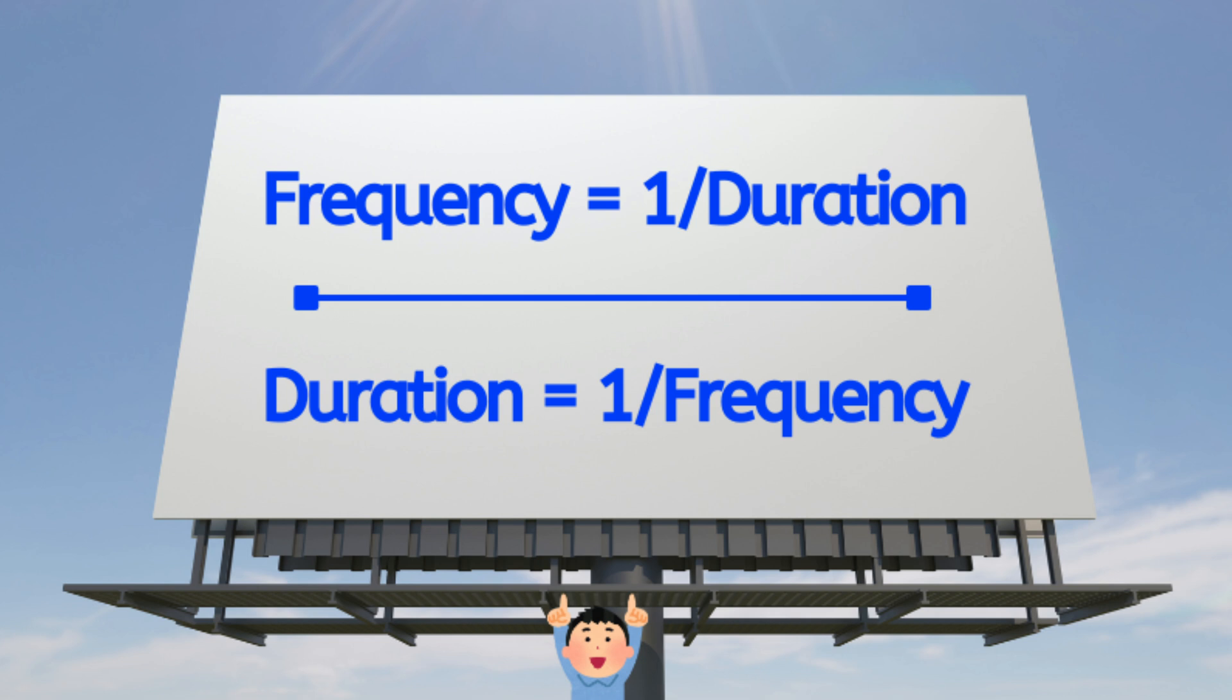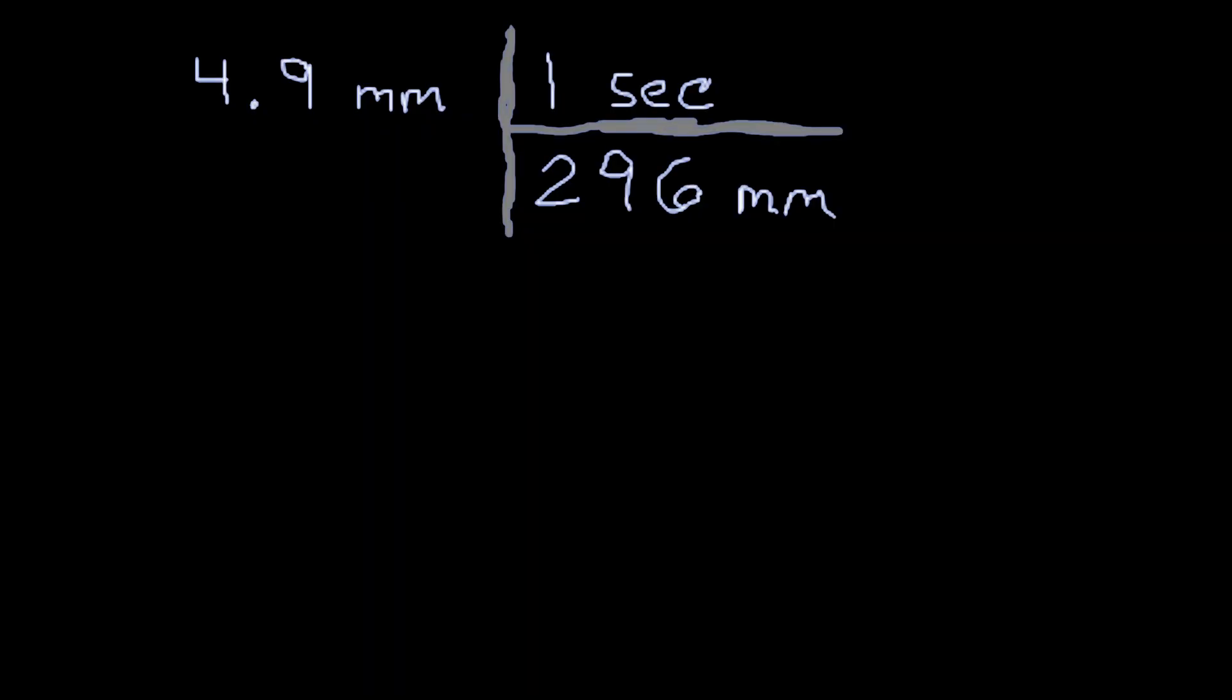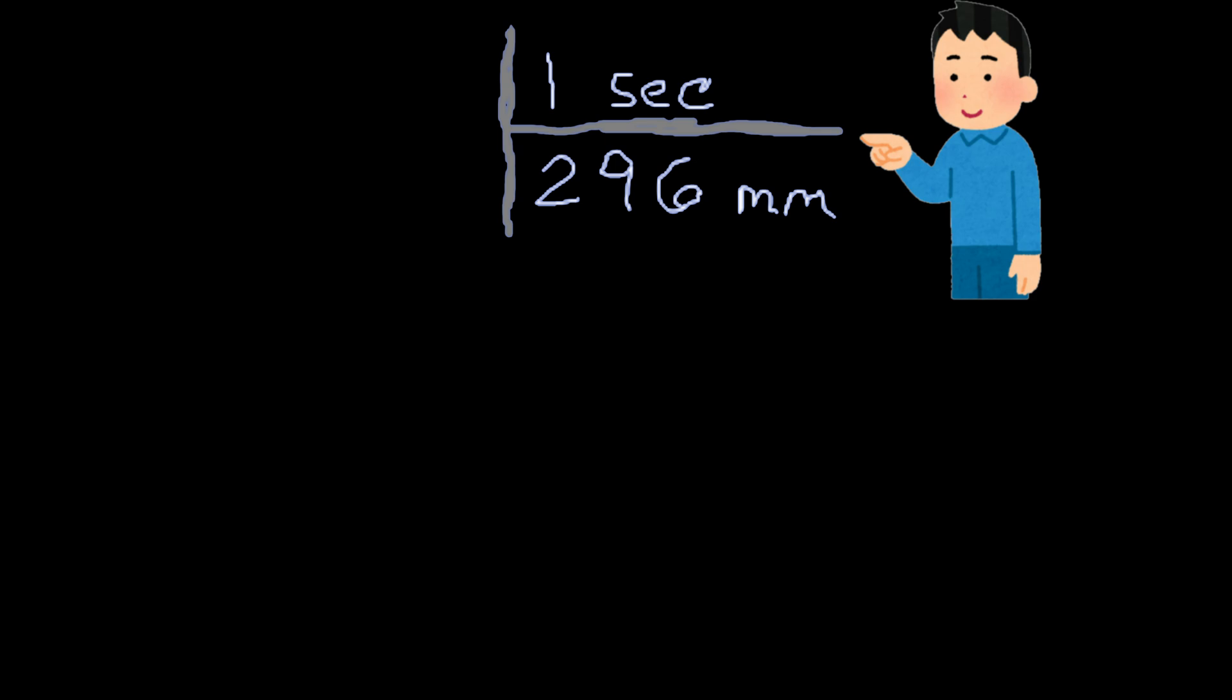It is important to remember that duration is the reciprocal of frequency and vice versa. So if you have the duration of something, to find the frequency you just divide it into one. It's one divided by the duration, and you want to measure that duration across the EEG baseline.